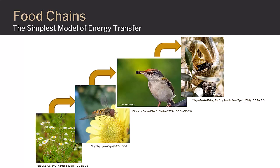In this example, the producer is a flowering plant, which uses the process of photosynthesis to convert water and carbon dioxide into glucose. This food can then be consumed by the insect, which is in turn consumed by a bird and then a snake. The arrows between the organisms display the direction of energy flow from the producers on up through the different consumers.